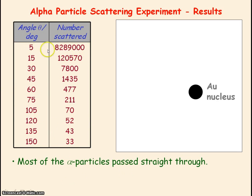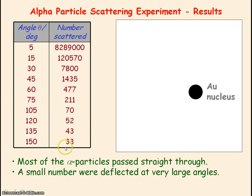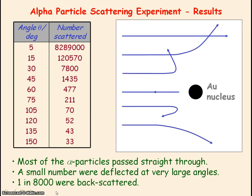Most had a very small deflection angle. However, a small number were deflected at very large angles, that is over 90 degrees. About one in 8000 were back scattered, representing an angle of deflection of 180 degrees.